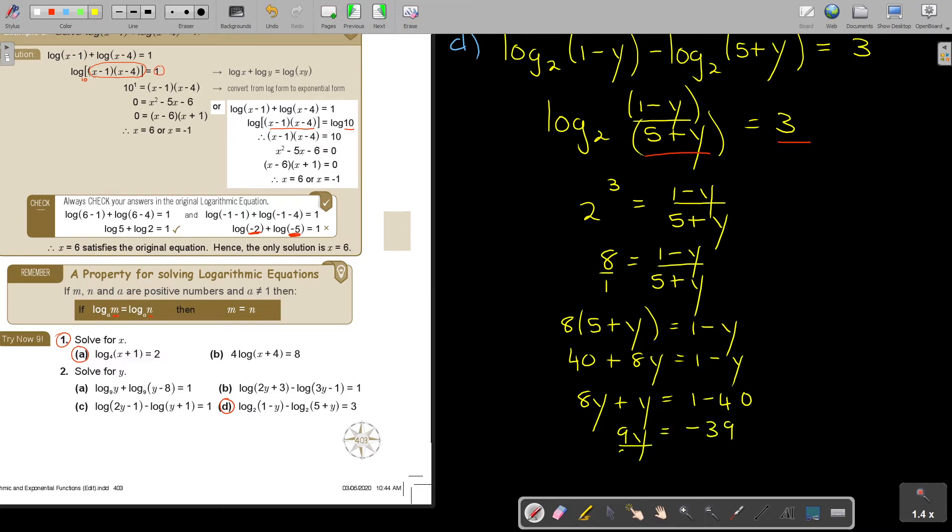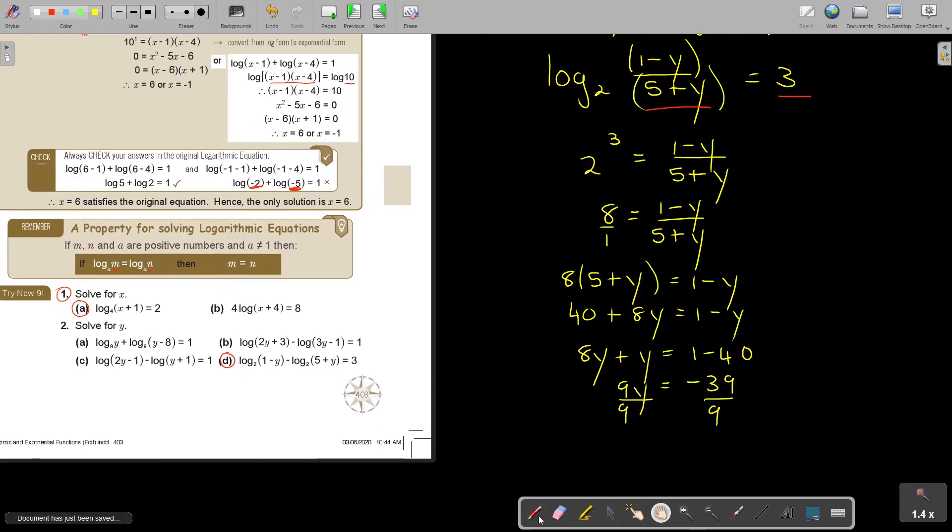So, I'm going to get 40 plus 8y is equal to 1 minus y. Let's just pick it up a little bit. Now, I can bring the y's over. So, 1, 8y plus that 1y. I take this over. So, it's 1 minus 40.